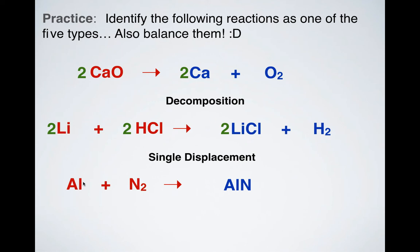What about this? I've got aluminum and nitrogen gas, and I'm making aluminum nitride. That would be an example of synthesis. Notice that in order to balance this, if I put a 2 in front of AlN, now I need to put a 2 in front of N₂ to balance out the nitrogens. Then I need to put a 2 in front of Al to balance out the aluminums on both sides.